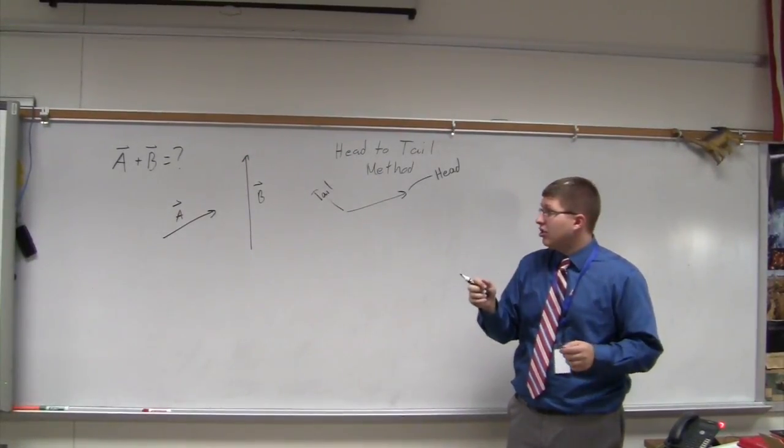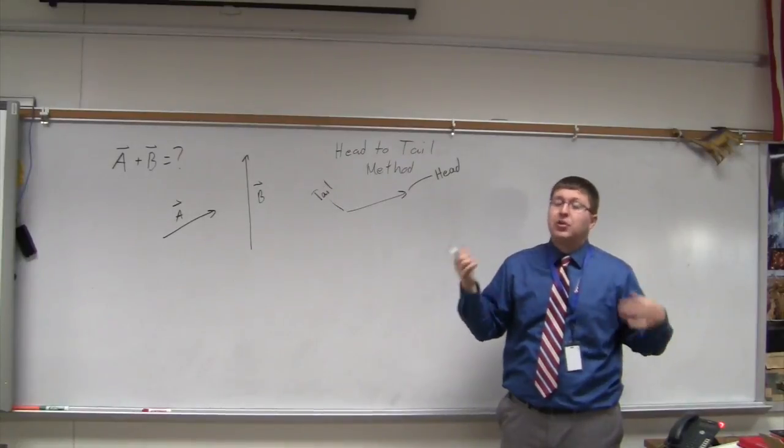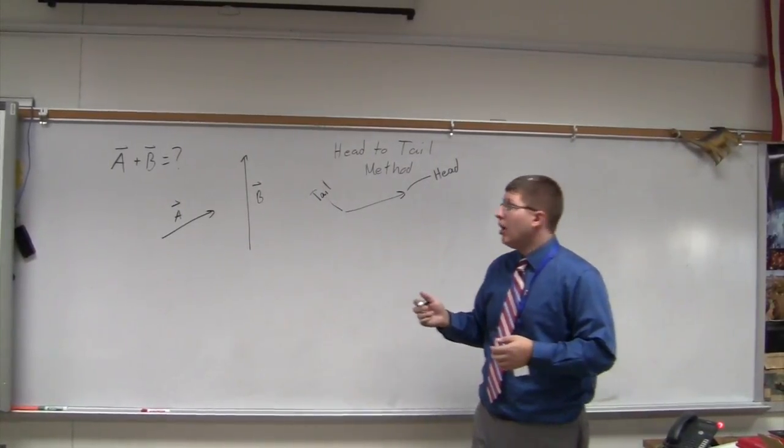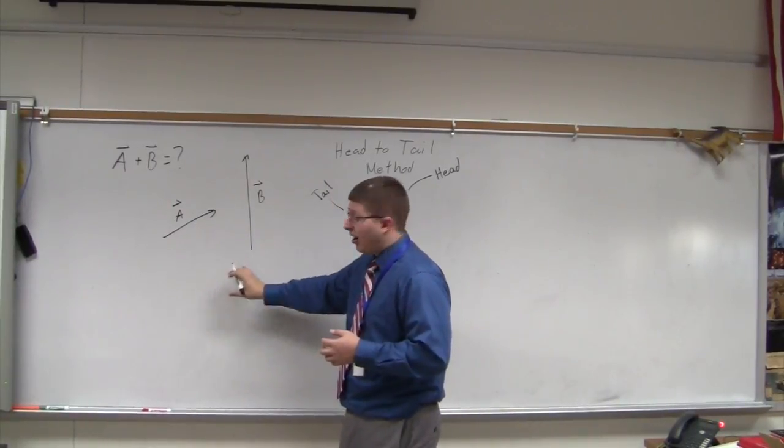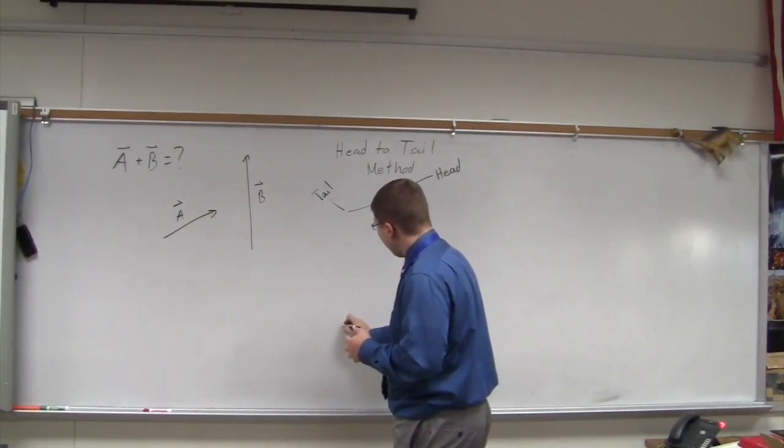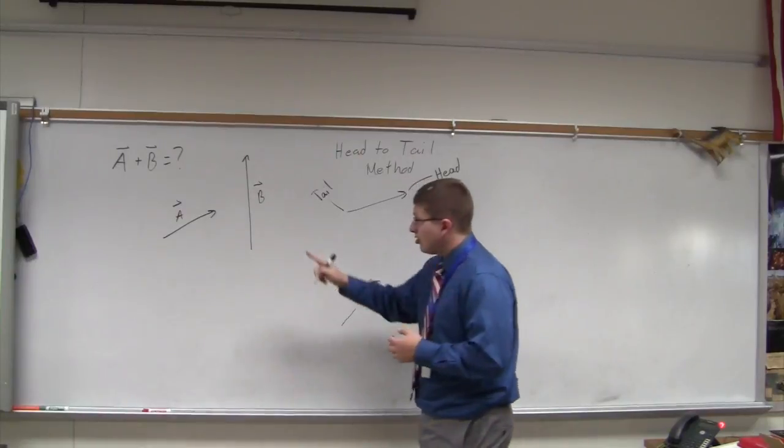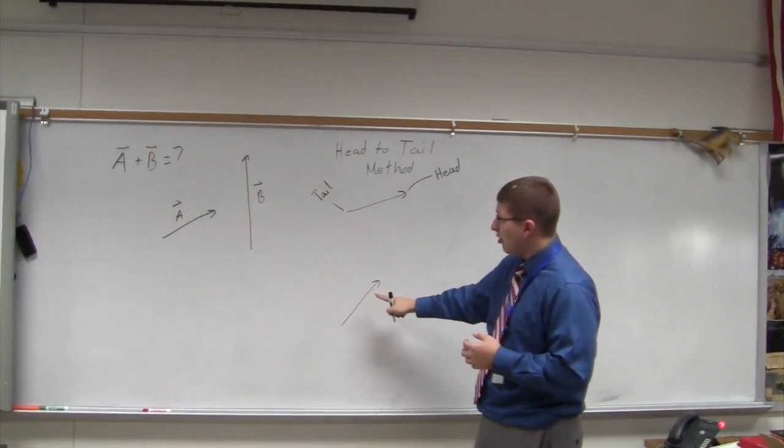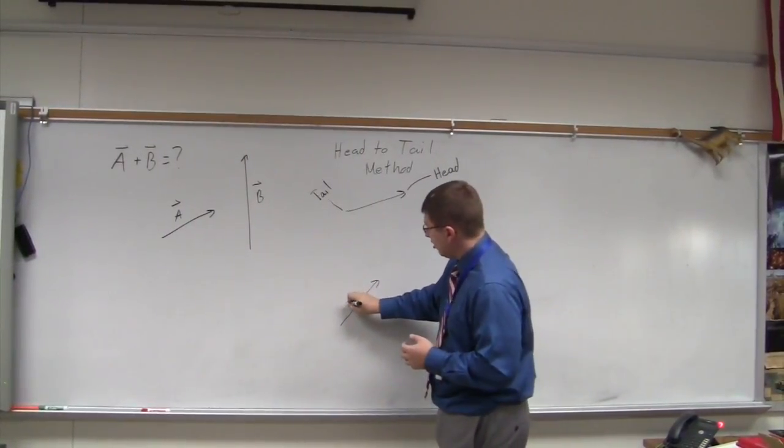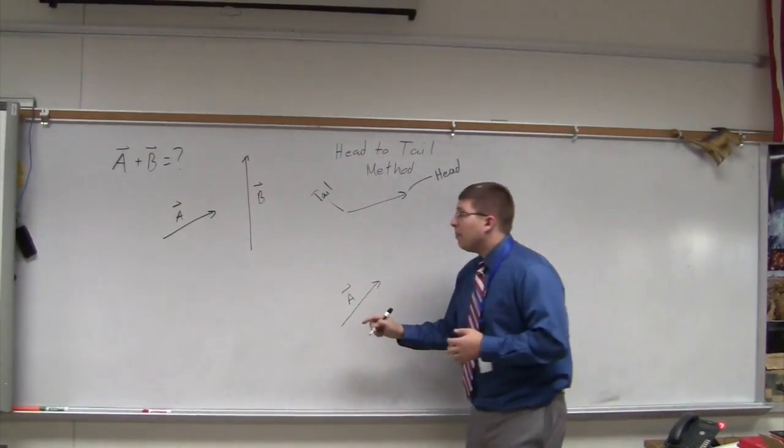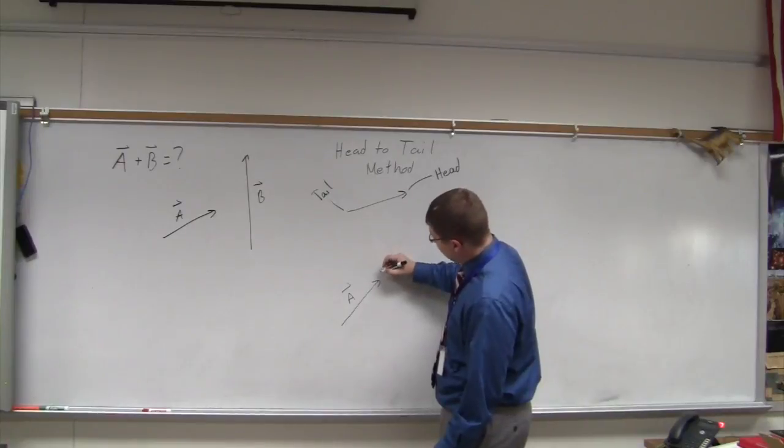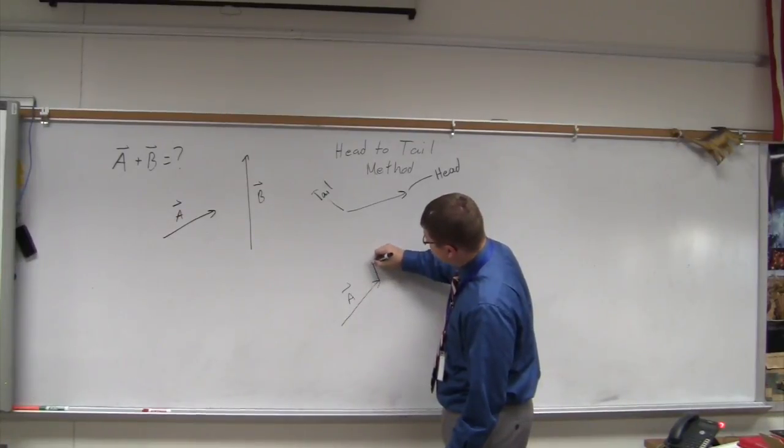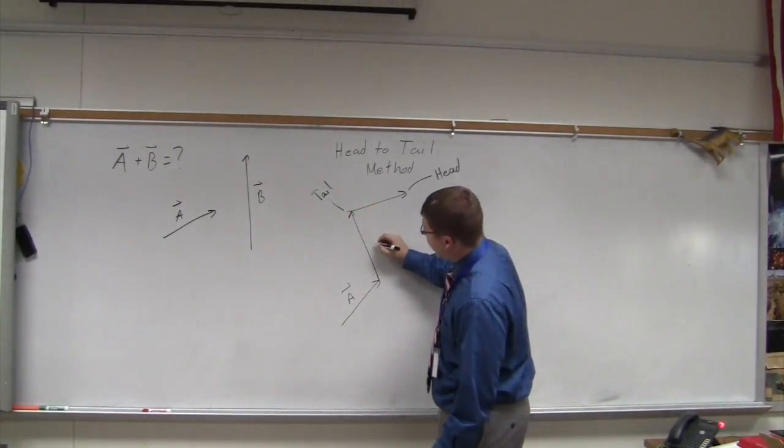We can't change their direction. We can't change their length, because that would change the vectors themselves. But what we could do is redraw them, almost as if we're sliding them around. So we could redraw them, as best as we can, the same length and same direction. But arrange it so that the head of vector A is sitting immediately at the tail of vector B.